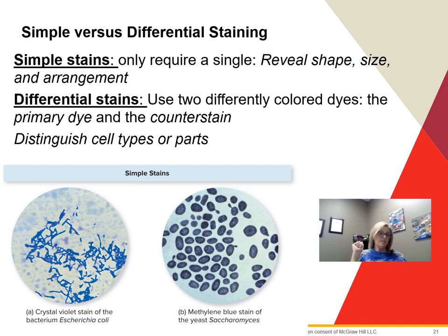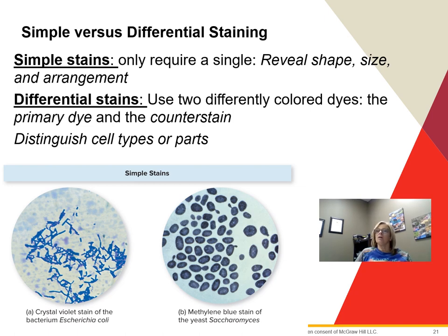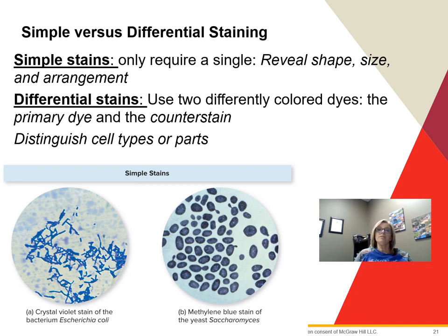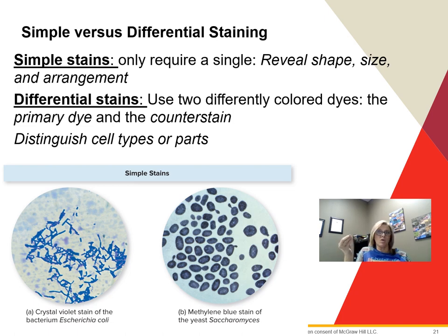Simple stains use only one dye, have few steps, and are an uncomplicated procedure. They cause all cells in the smear to be about the same color regardless of type. The purpose is to reveal the shape, size, and arrangement of bacteria — meaning how they are grouped: singles, pairs, or clusters.